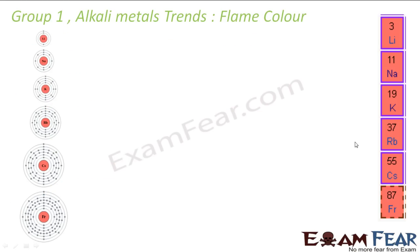Let's discuss the alkali metal flame color test. Why do most alkali metals give colored flames when heated? The moment you pass heat or light to an atom, the electron jumps. When this electron comes back to the same shell, it radiates light of a different color. That's why you get different colors when you heat these metals in a flame. This is one of the good tests to determine metals using the flame test.